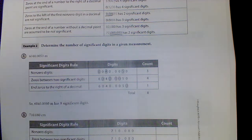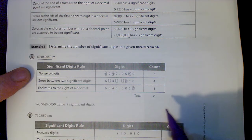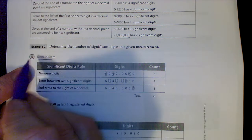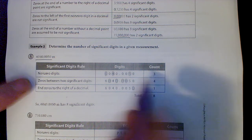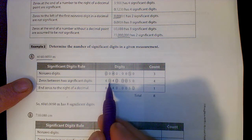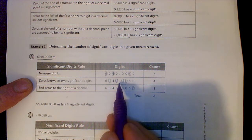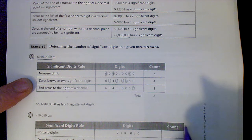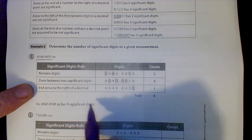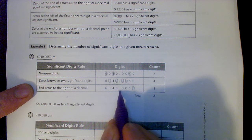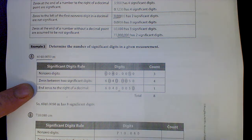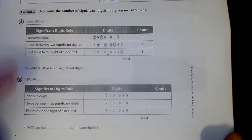Here's how you count significant digits - it's really only a couple of things you're counting. With this number, you count non-zeros: six, four, and five - that's three. You count zeros between significant digits: there's one zero between six and four, and three zeros between four and five. And zeros to the right of a decimal - since there's a decimal right there, those count too. That gives eight significant digits total.